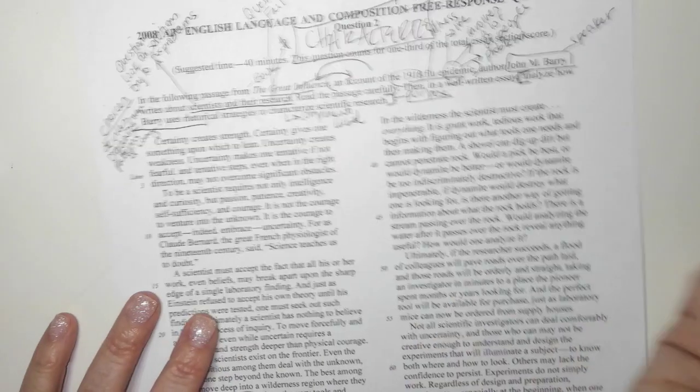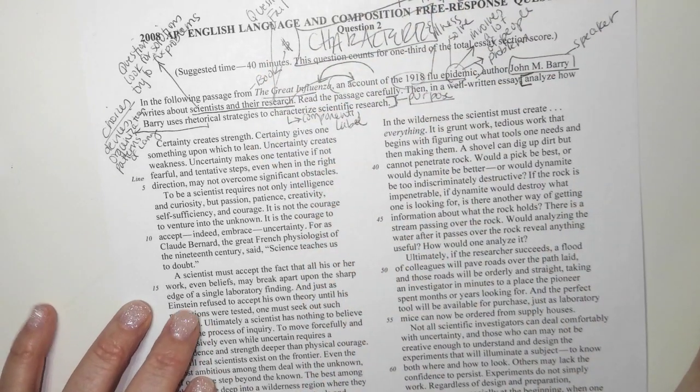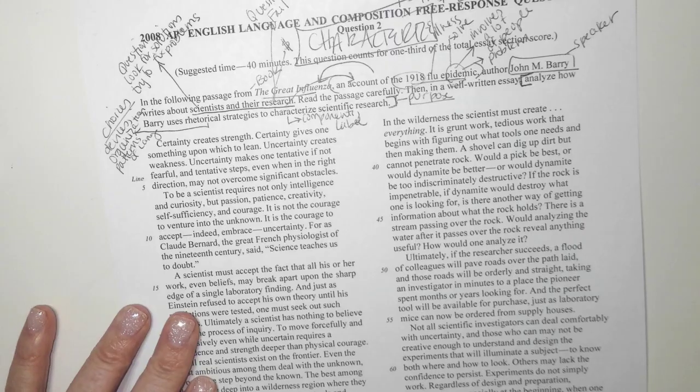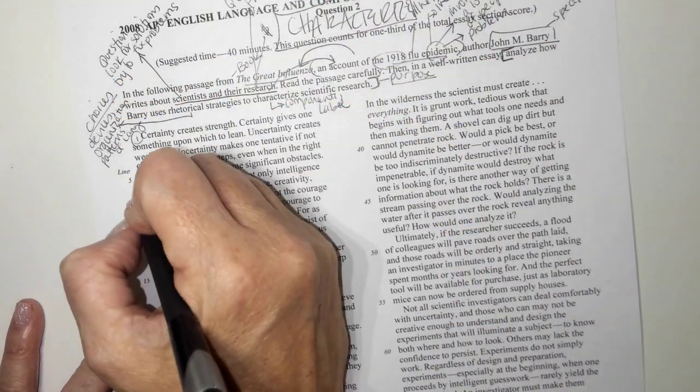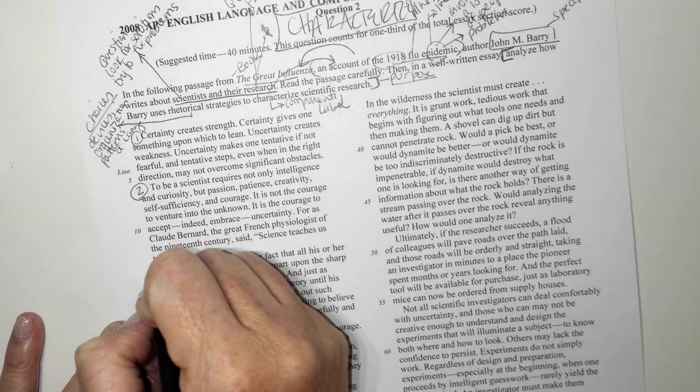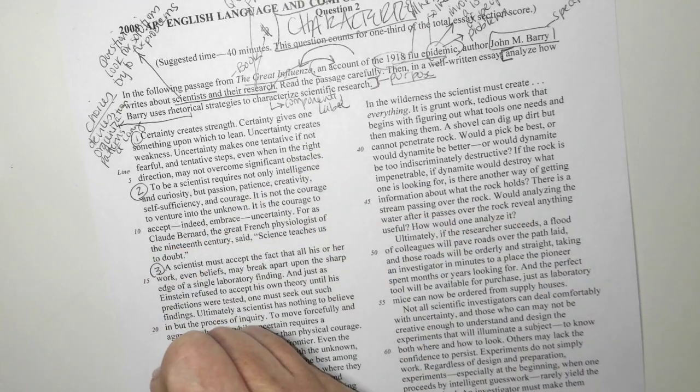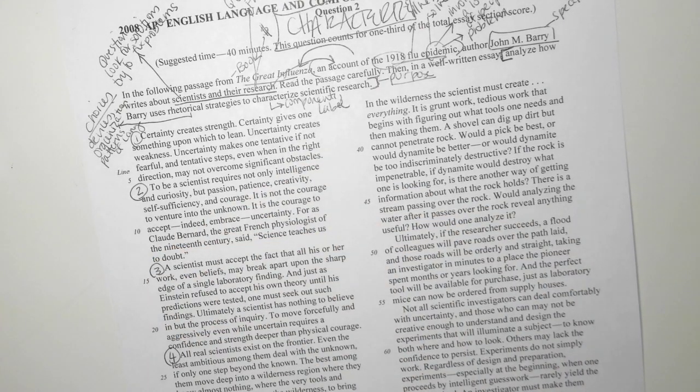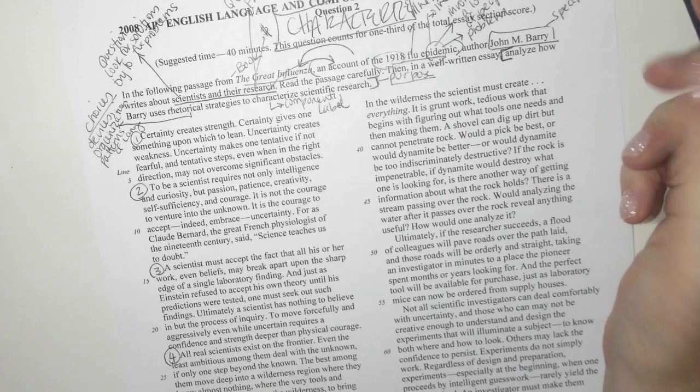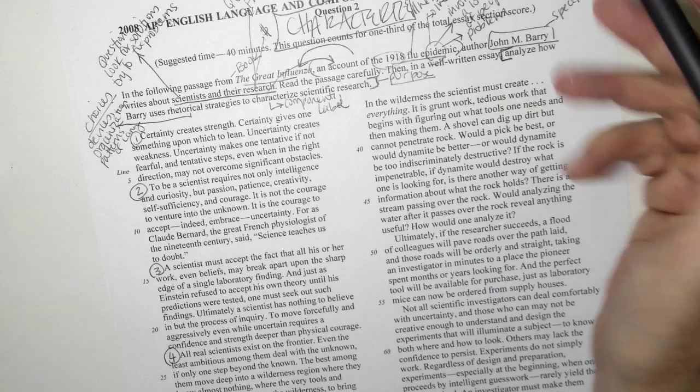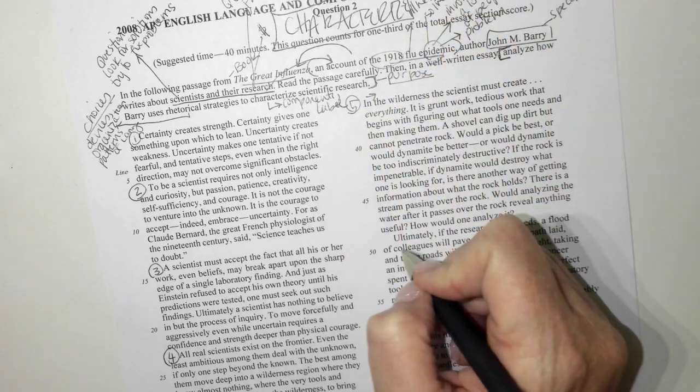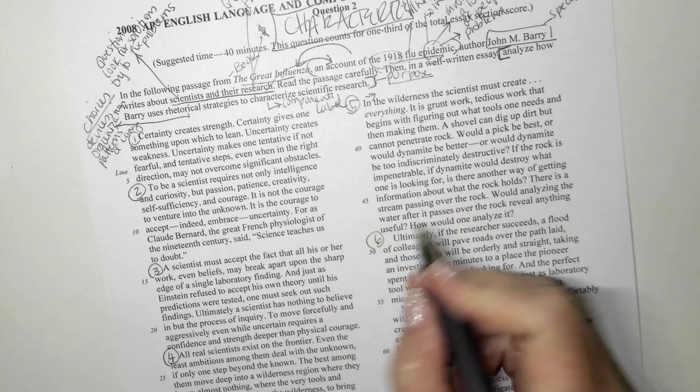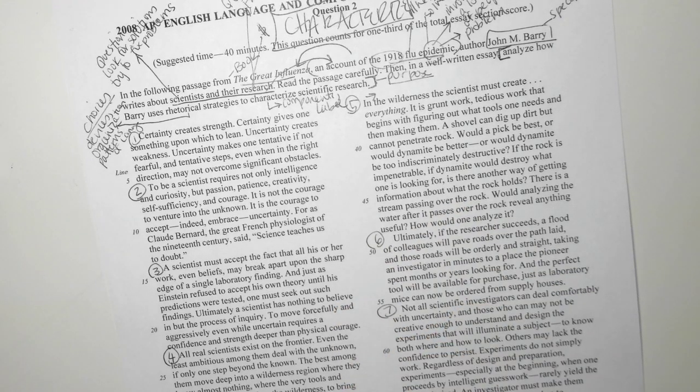Next thing we want to do before we jump in and read is we want to number our body paragraphs, because when we number our body paragraphs, it helps us to organize our essay. Okay. So certainty is one, to be is two, a scientist is three, all real is four, a single step is not five, sorry. This should be in the wilderness should be indented here. Ultimately is six. And then not all is seven. All right.